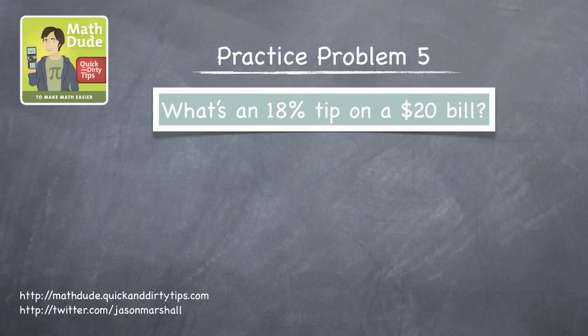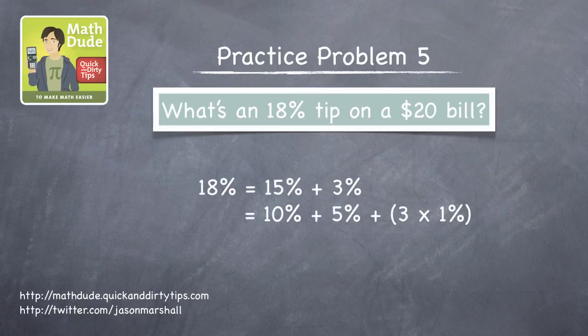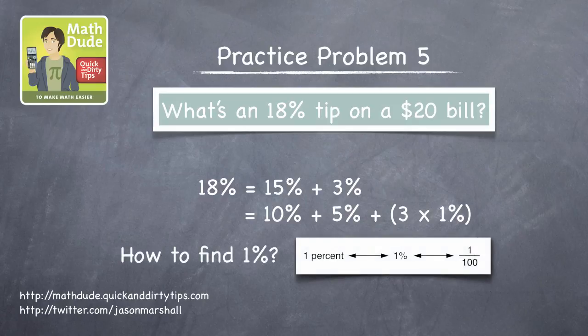And the final practice problem asks for an 18% tip on a $20 bill. 18%? How can we find that? Well, notice that 18% is just 15% plus 3 times 1%. And finding 1% is no harder than finding 10%.